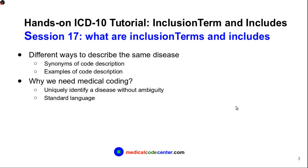So what are Inclusion Terms and Includes? Inclusion Terms and Includes are basically two types of instructional notations, or coding notes, or coding conventions. Depending on the doctor, we usually have different ways to describe the same disease condition. So Inclusion Terms and Includes are basically synonyms of a coded description. In some other cases, Inclusion Terms and Includes will list the examples of a coded description.